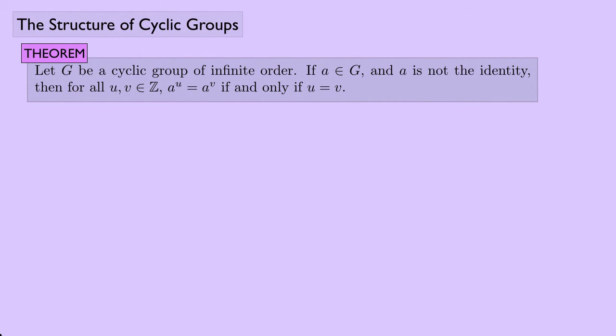Here's another theorem: let G be a cyclic group of infinite order and let A be an element of G that is not the identity. Then for any integers U and V, A^U = A^V if and only if U = V. In other words, all the powers of A are distinct with no repeats. The backwards direction — assuming U = V and showing A^U = A^V — is clear.